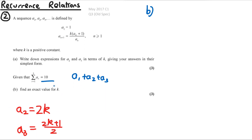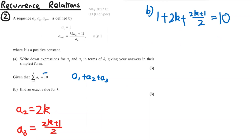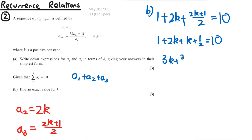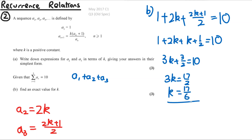For part (b), the sigma notation sums a_r from r=1 to 3, and this equals 10, so we solve for k. We have a1 + a2 + a3 = 1 + 2k + (2k+1)/2 = 10. Simplifying: 3k + 3/2 = 10 − 1 = 9... giving 3k = 17/2, so k = 17/6. That's the final answer.